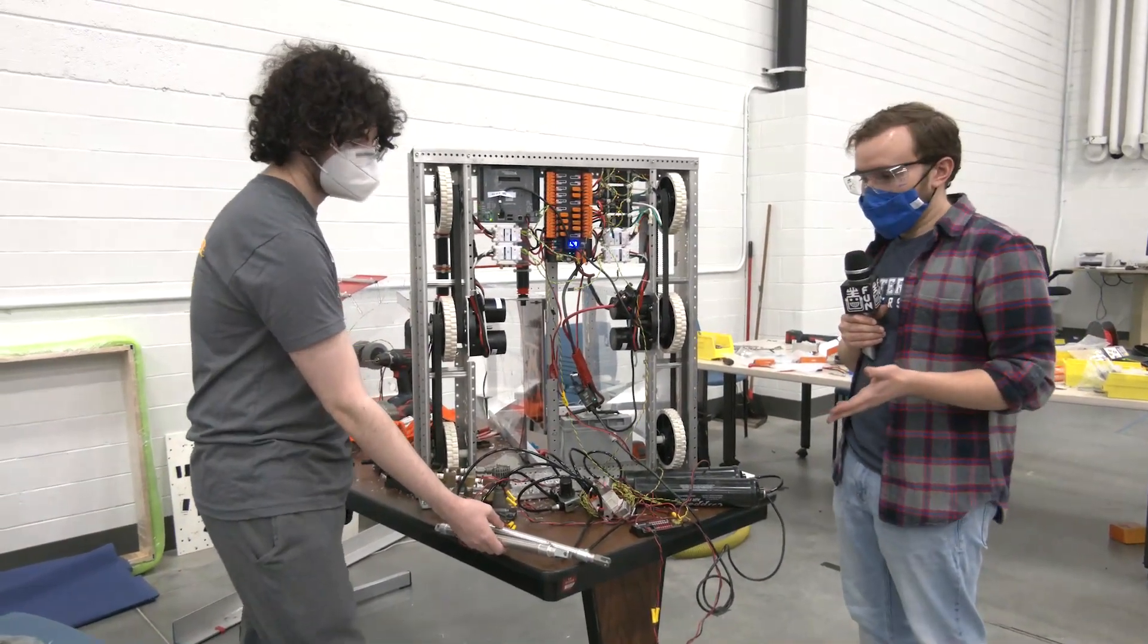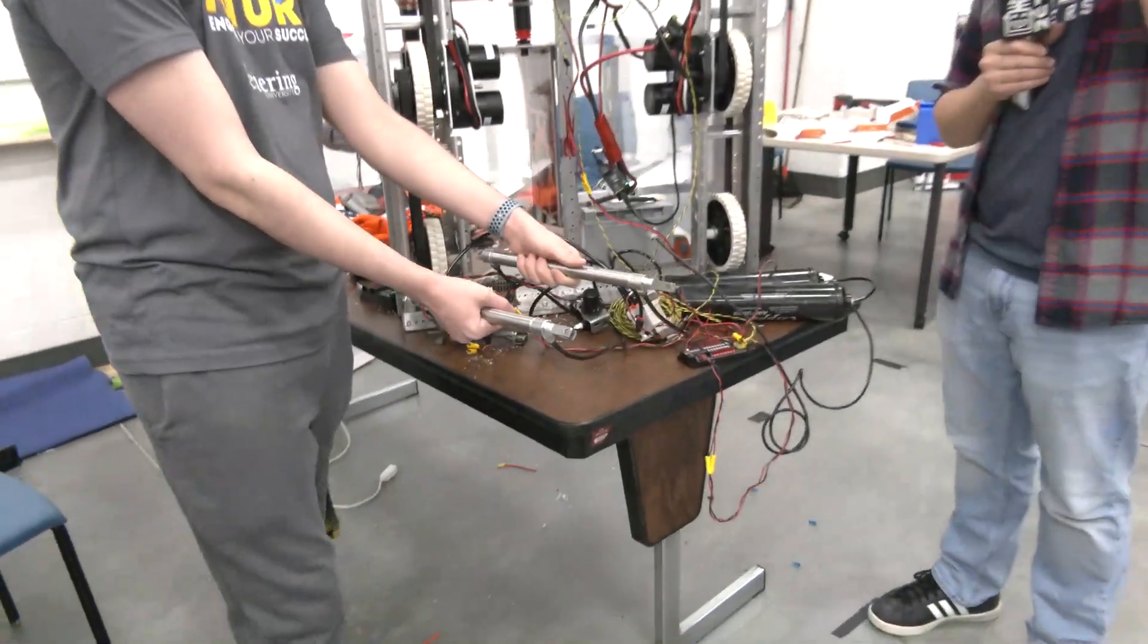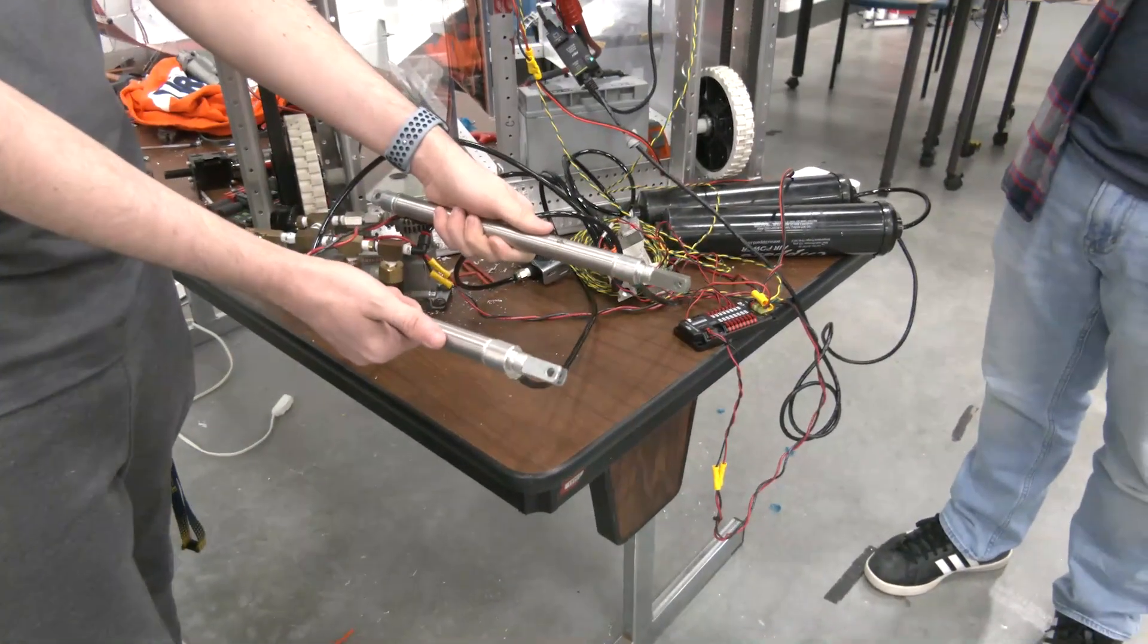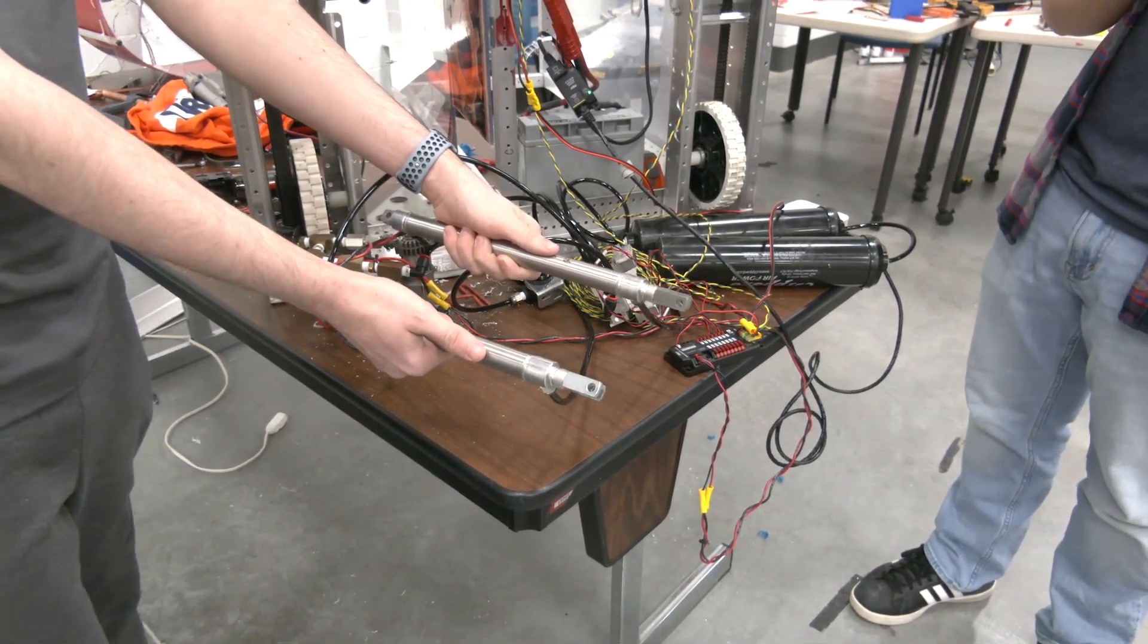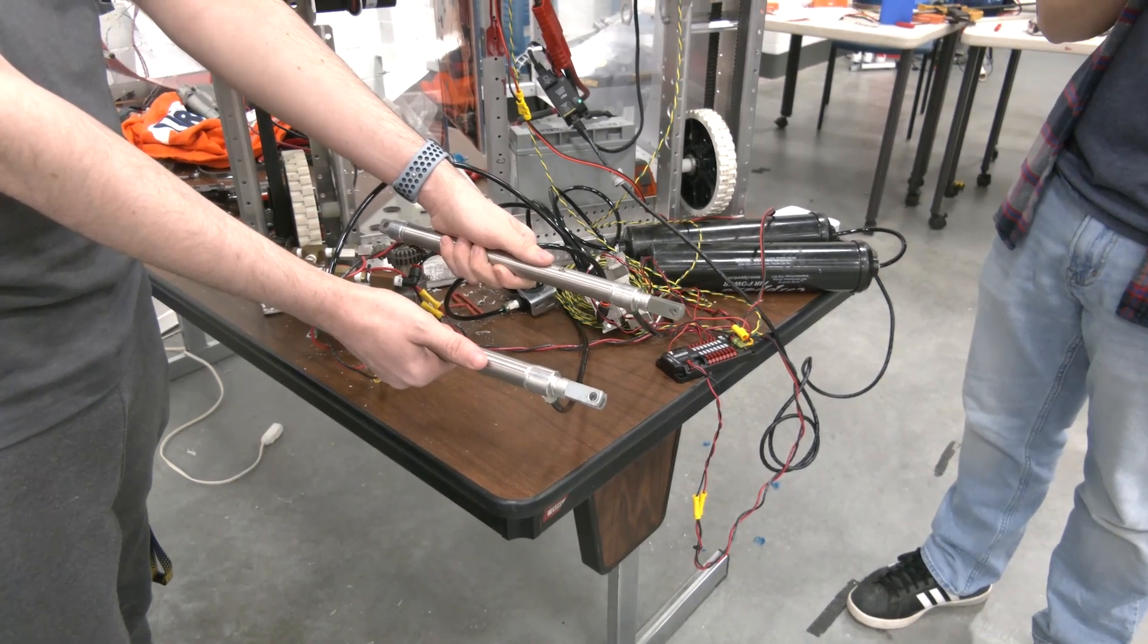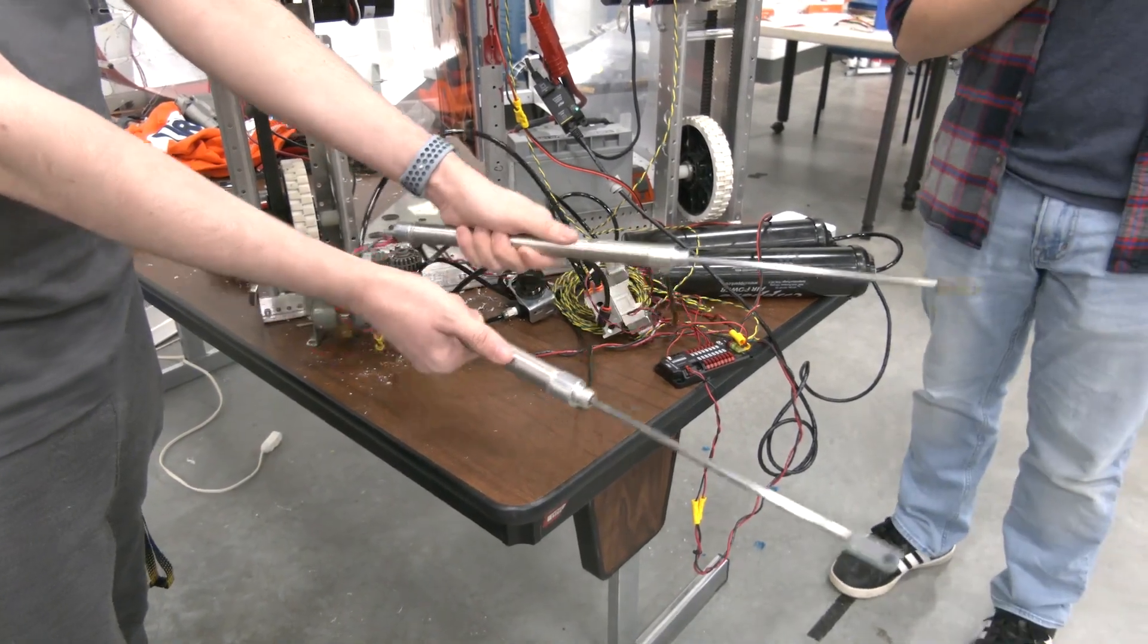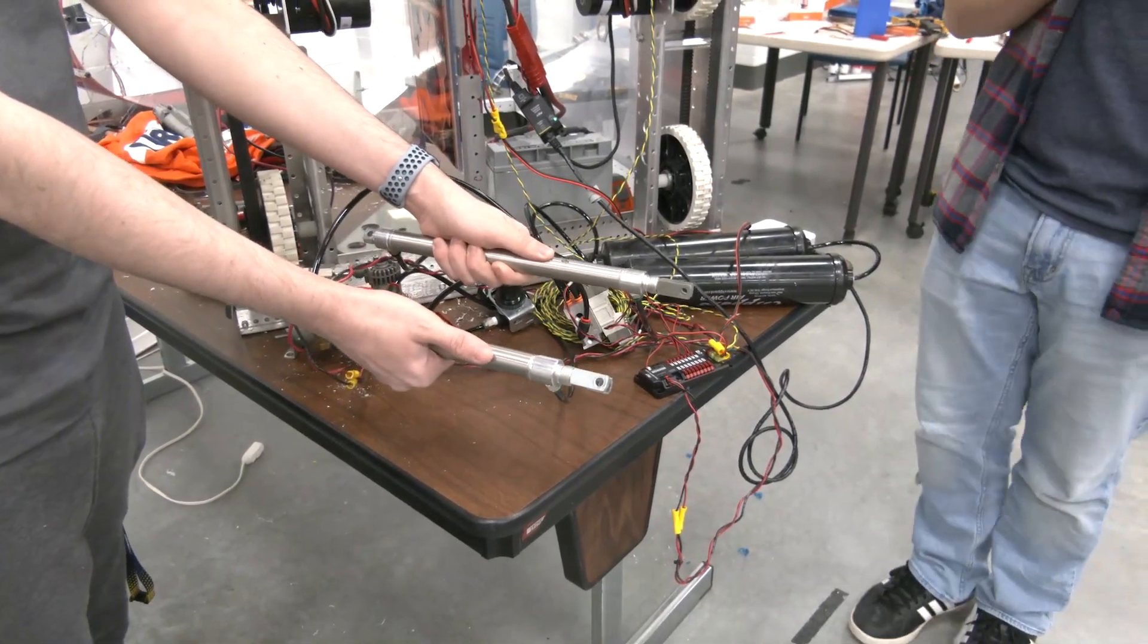We can now do a demonstration of our pistons, and you'll be able to see why for intaking game pieces we really had to go with pneumatics, because we can get some great speed running these. They're not under load right now obviously, but under load these are going to be very much at about the same speed, so we can fire those out and retract them.